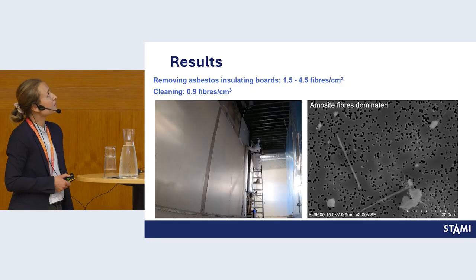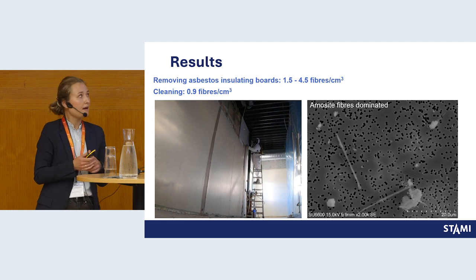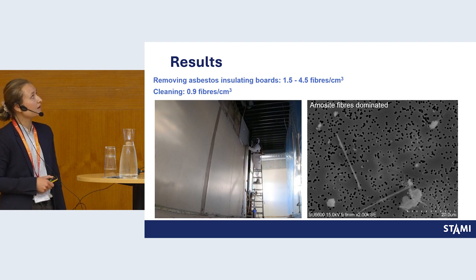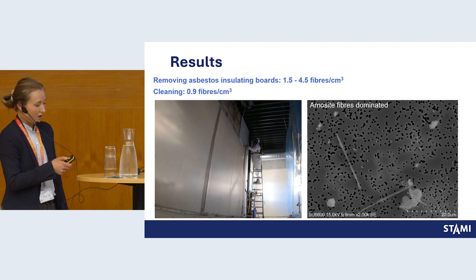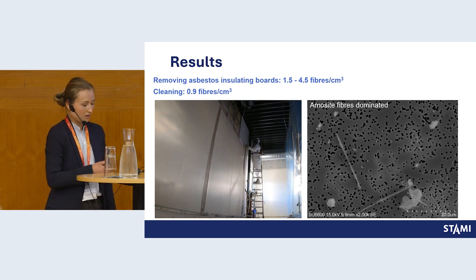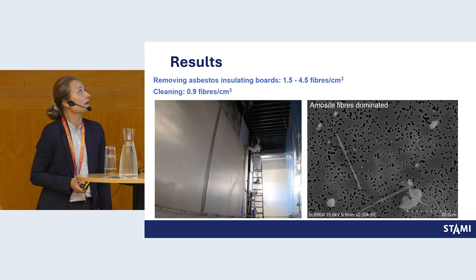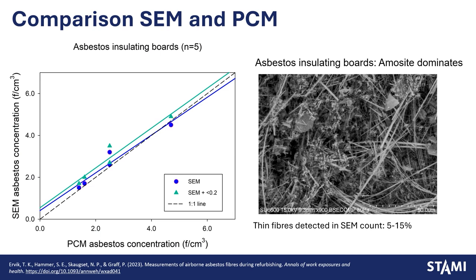For removing asbestos insulating boards — a material used for wall and roof plates — this is a quite friable material, and the concentrations measured were quite high: 1.5 to 4.5 fibers per cubic centimeter, including during cleaning. This is based on one and five samples respectively, so not many. We found that amosite fibers dominated, but chrysotile fibers were also present. Comparing SEM and PCM, we see a good correlation, even when including thin fibers in the SEM count, and they are not far from the ideal one-to-one relationship.